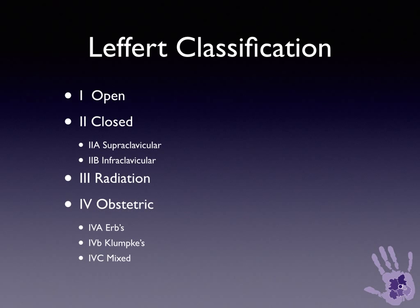Type 4 is obstetric. Type 4A is Erb's palsy, with poor shoulder function from a C5-C6 injury. Type 4B, Klumpke's palsy, is a rarer palsy associated with isolated injury to the lower trunk, C8-T1, resulting in poor hand function but good shoulder function. And type 4C is a mixed injury.